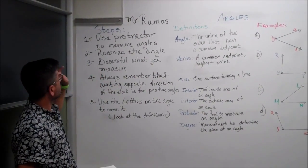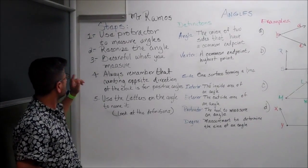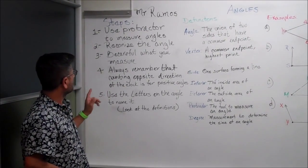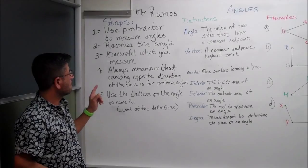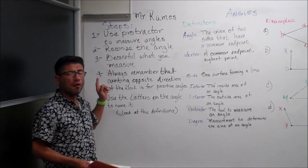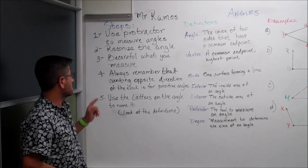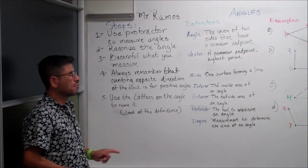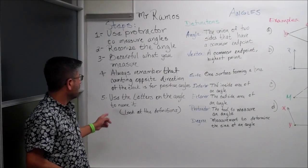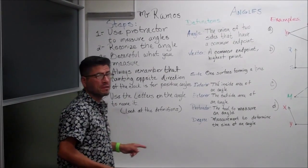First step: use a protractor. Second, recognize the angle. Third, be careful what you measure. Fourth, always remember that counting out the direction of the clock is for positive angles. And five, use letters of the angle to name it.